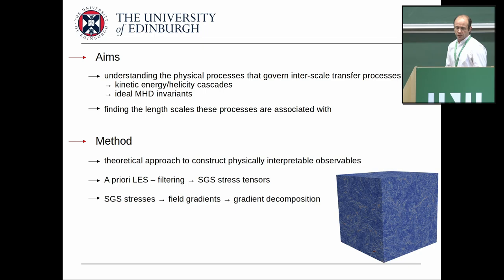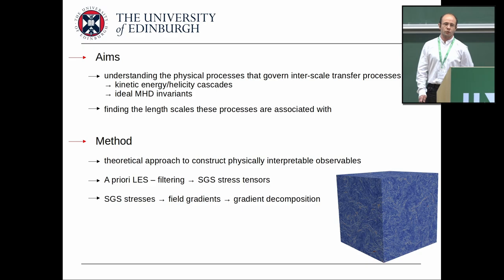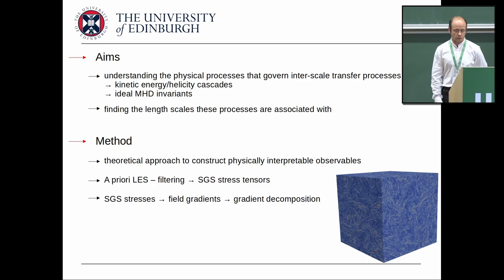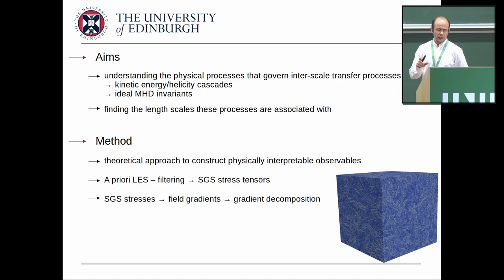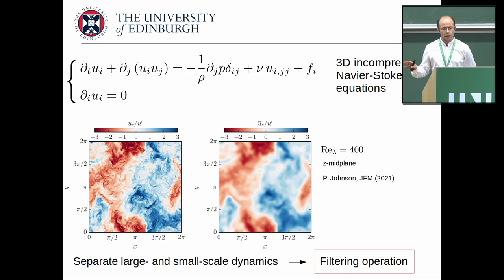The method I'll discuss is an approach to construct physically interpretable observables for the energy fluxes. I'll use an a priori LES filtering approach, working with SGS stress tensors. The key point is a method by which you can express the SGS subgrid-scale stresses through velocity and magnetic field gradients, then decompose those gradients into symmetric and anti-symmetric parts — magnetic strain and current, or strain and vorticity — and couple them to think about effects like vortex stretching and strain self-amplification. I'll first introduce the method for hydrodynamics and then come to MHD.